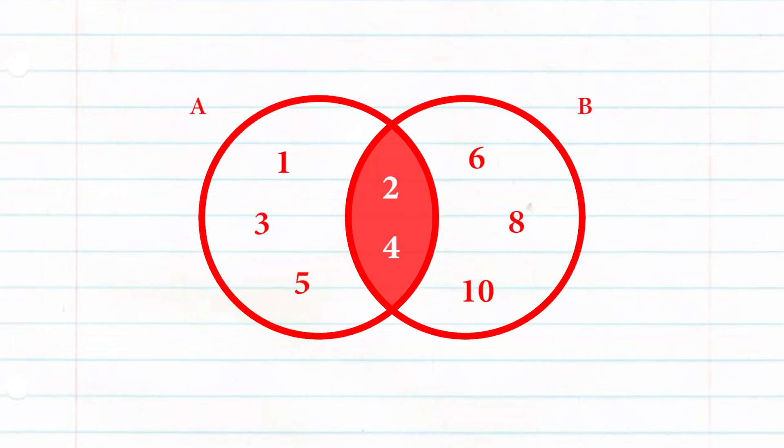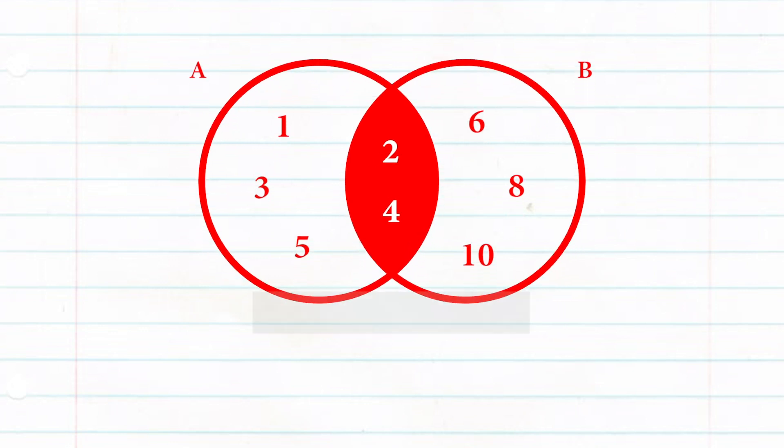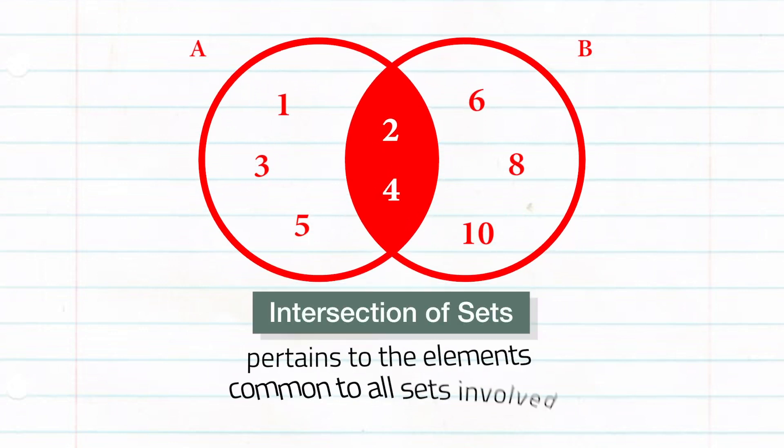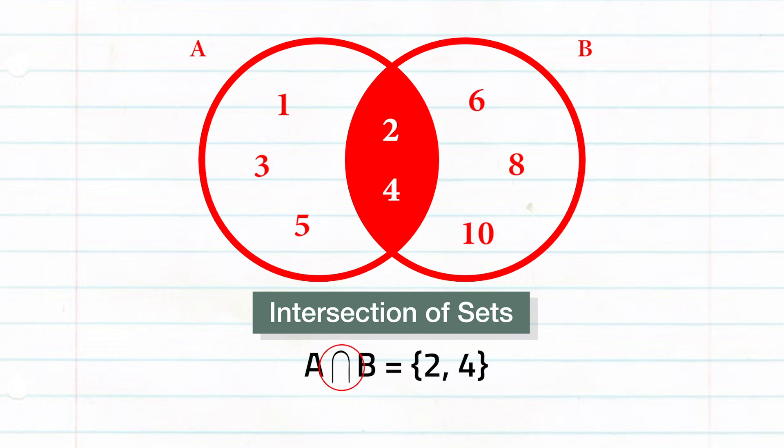The elements in the overlapping part represent our first set operation: the intersection of sets. Intersection of sets pertains to the elements common to all sets involved. It is symbolized by an upside-down U.